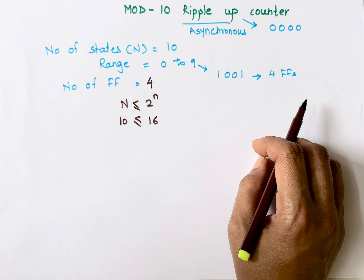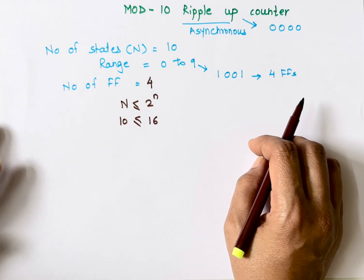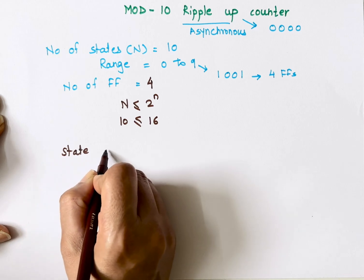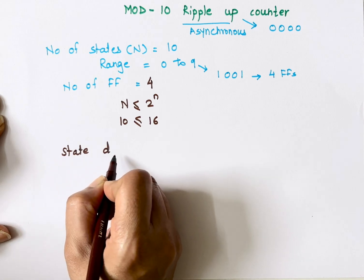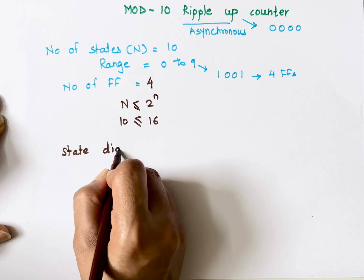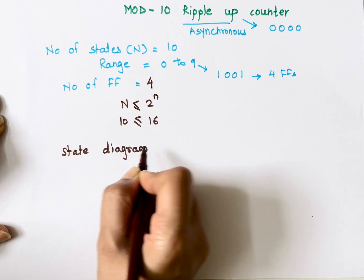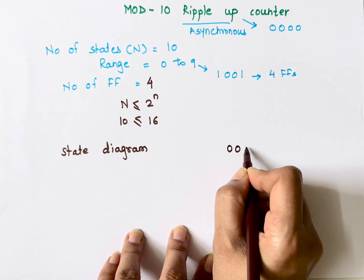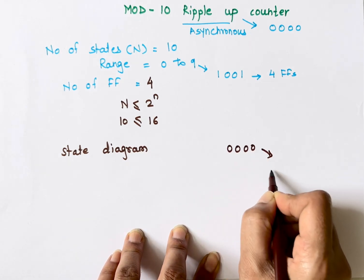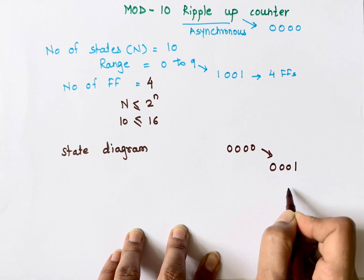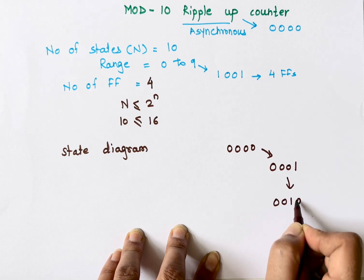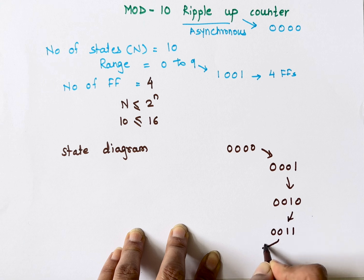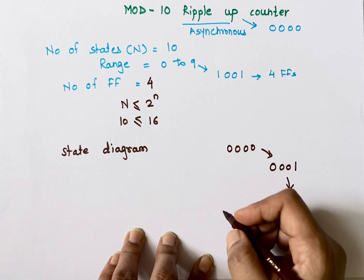The next step is to draw the state diagram. The state diagram tells us through which states our circuit moves. States go from 0 to 9. It starts from 0 0 0 0, then goes to 0 0 0 1, then 0 0 1 0 (which is 2), then 0 0 1 1 (which is 3), then 0 1 0 0 (which is 4).